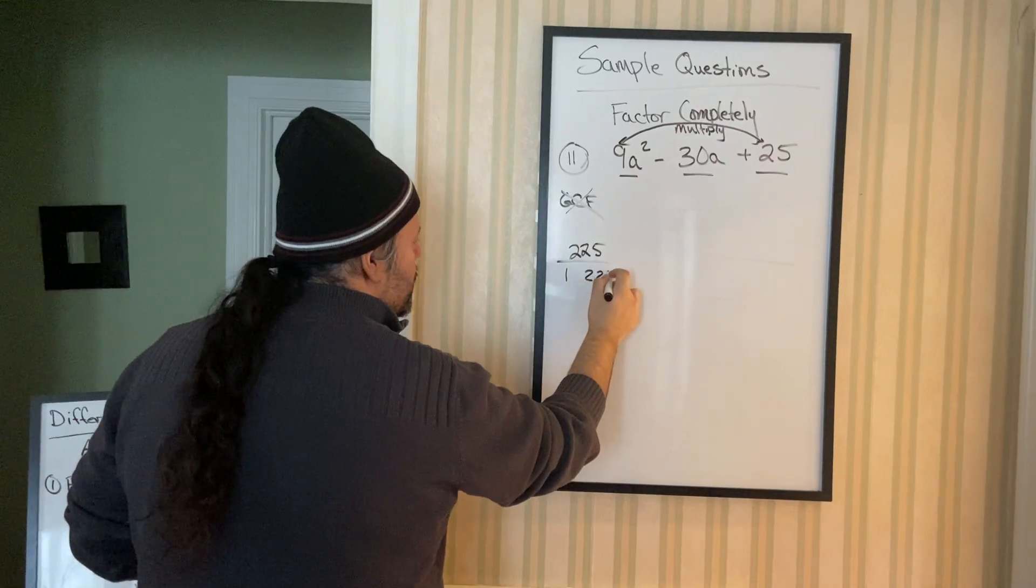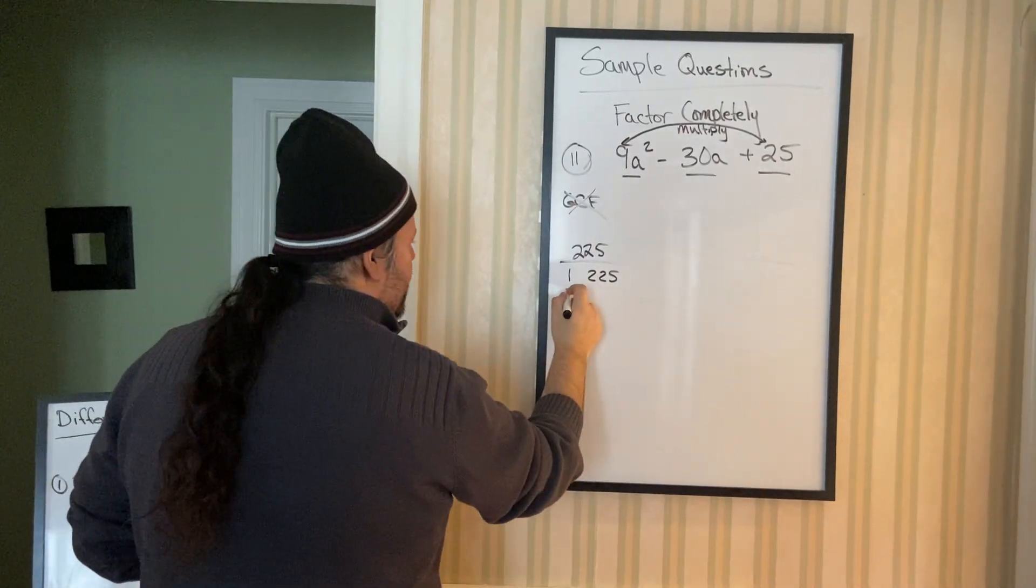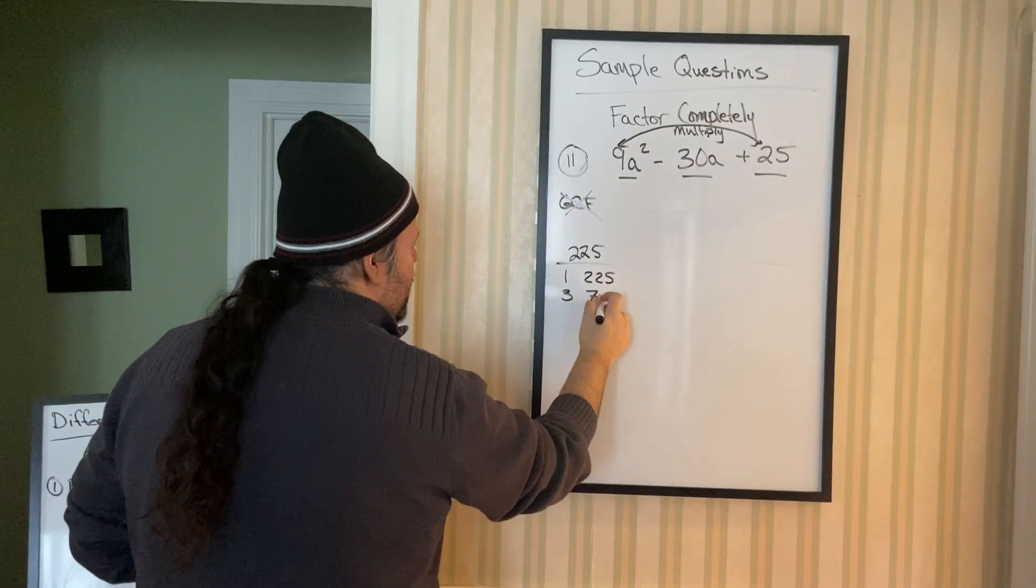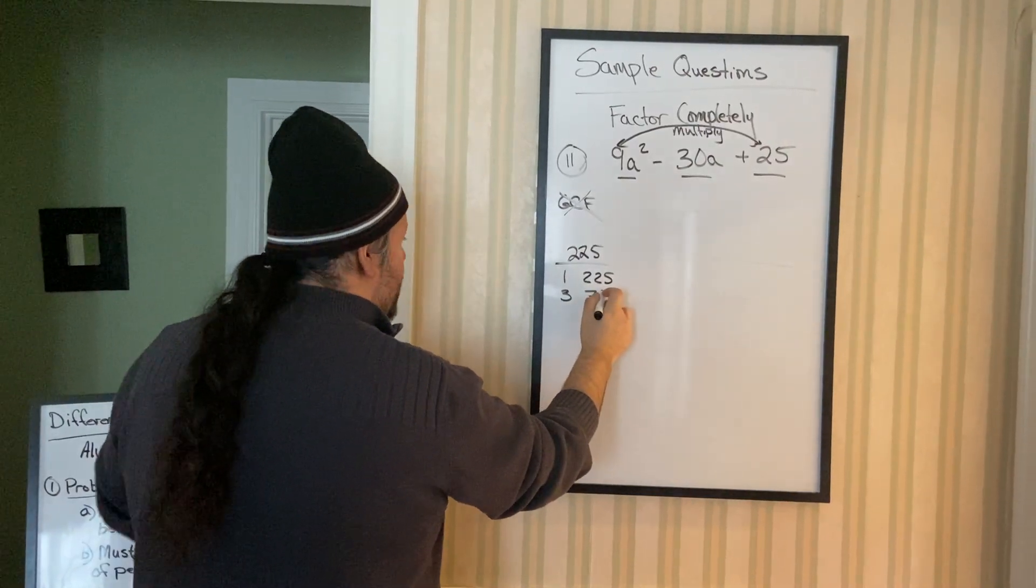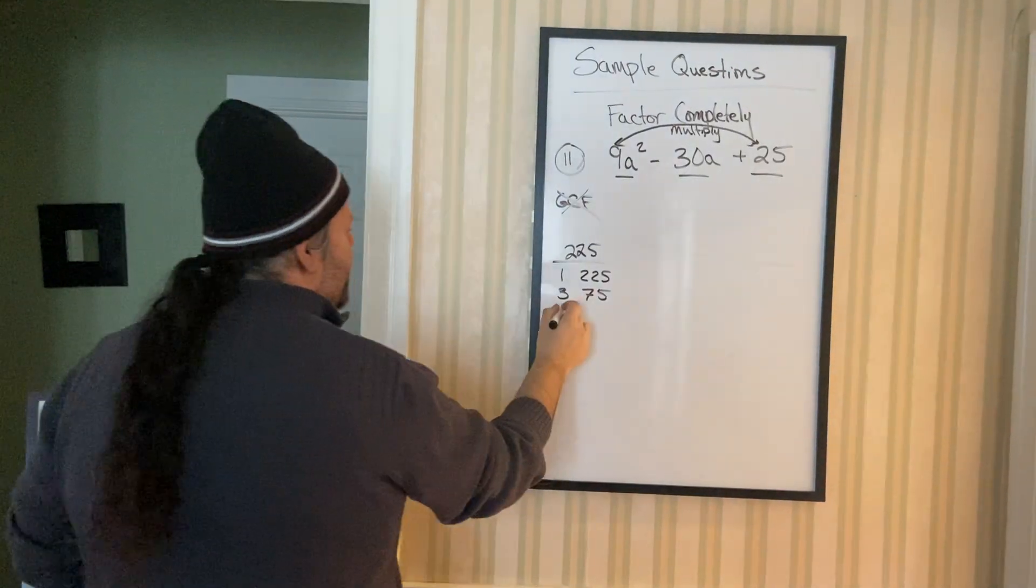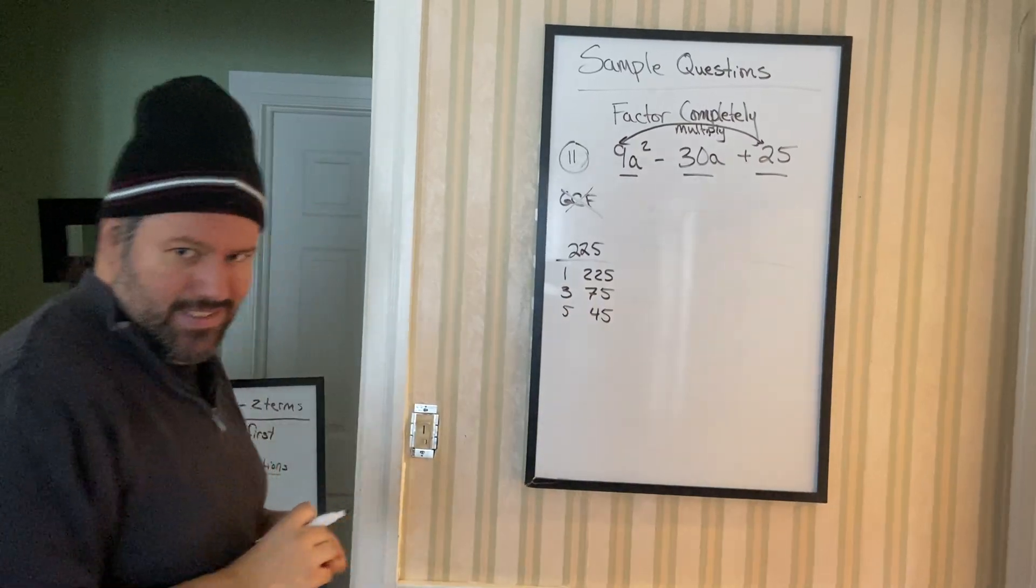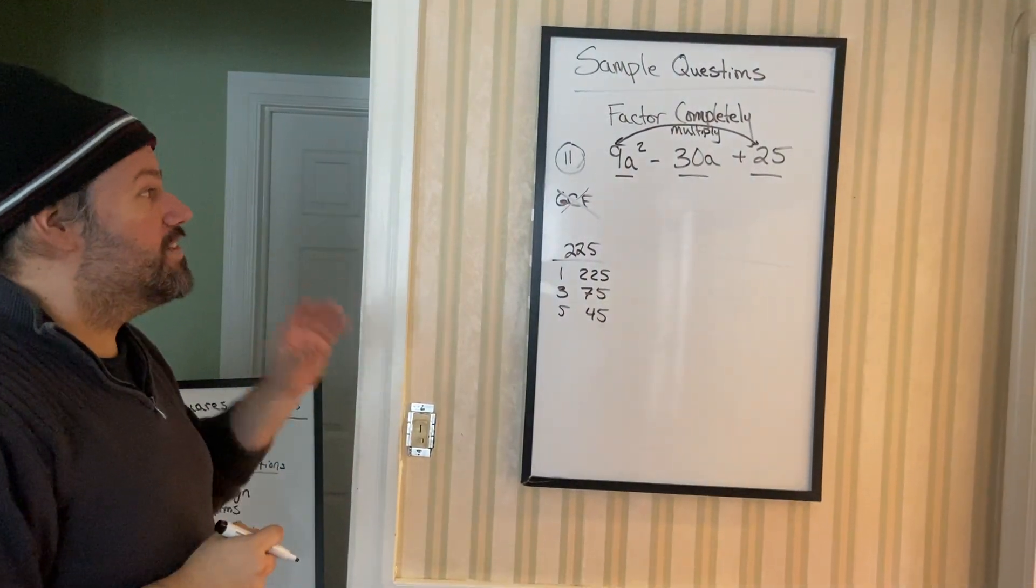Now, because you have a calculator, you could theoretically go for the list. Go 1 and 225. 2 won't work. 3 does. 3 times 75. 4 won't work. 5 does. You could go for this list. But here's the trick.